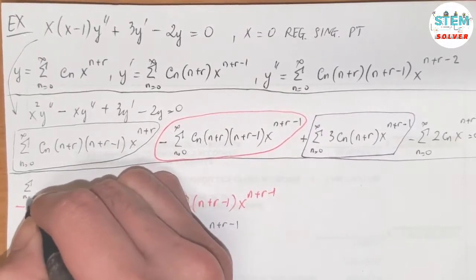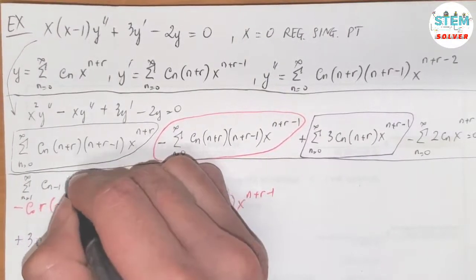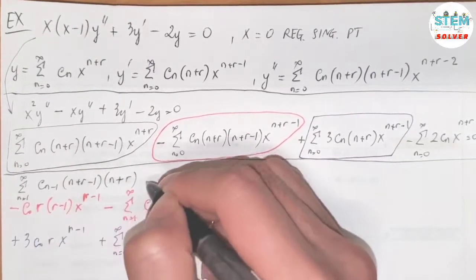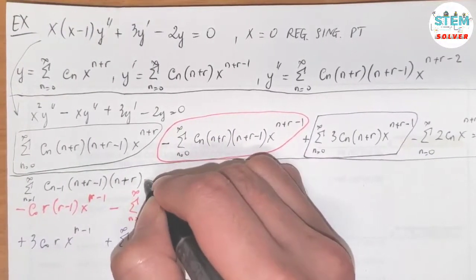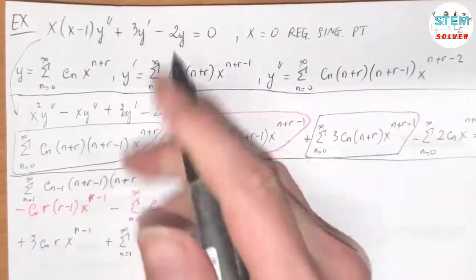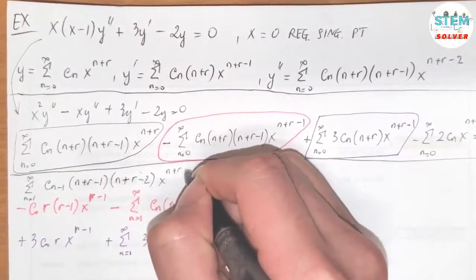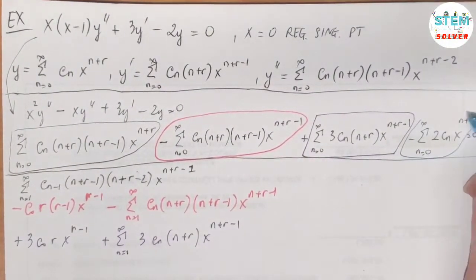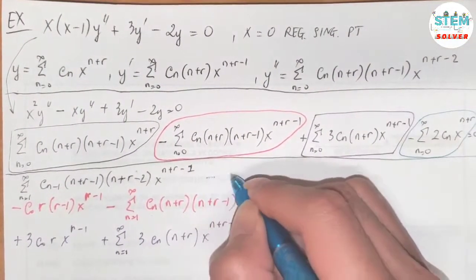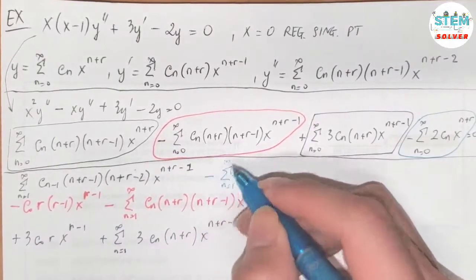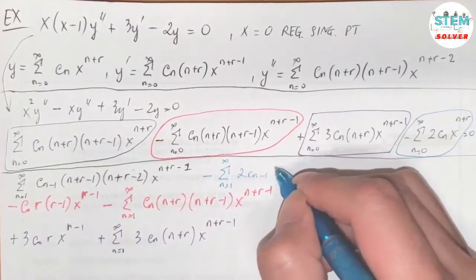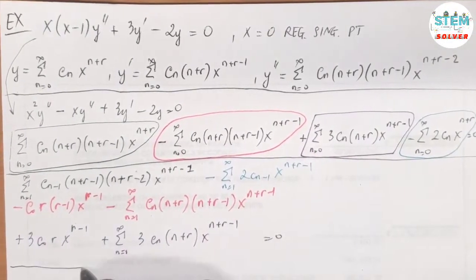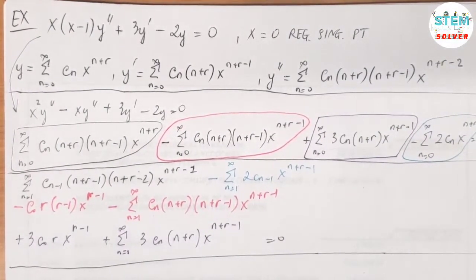Bringing the index to 1, I have the series from 1 to infinity of c_{n-1}(n plus r minus 1)(n plus r minus 2) times x to the n plus r minus 1. And for the fourth series, I do the same: series from 1 to infinity of 2c_{n-1} times x to the n plus r minus 1, where r equals 0. Now we combine like terms.